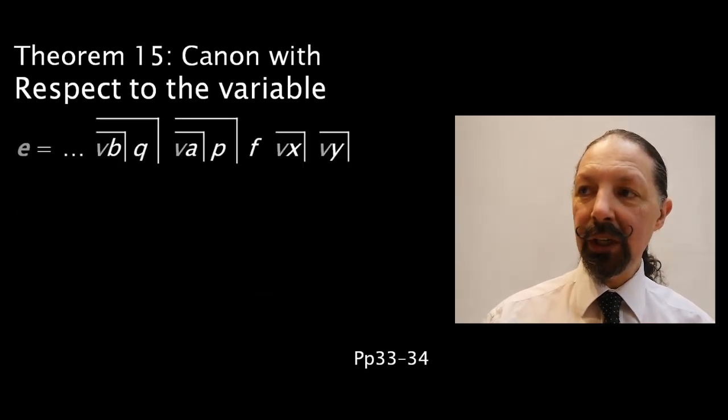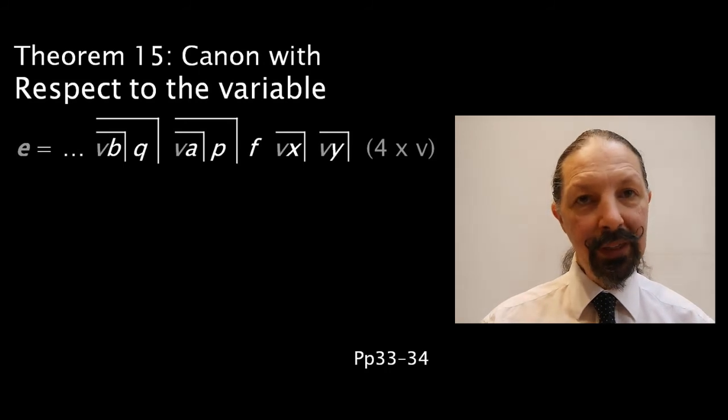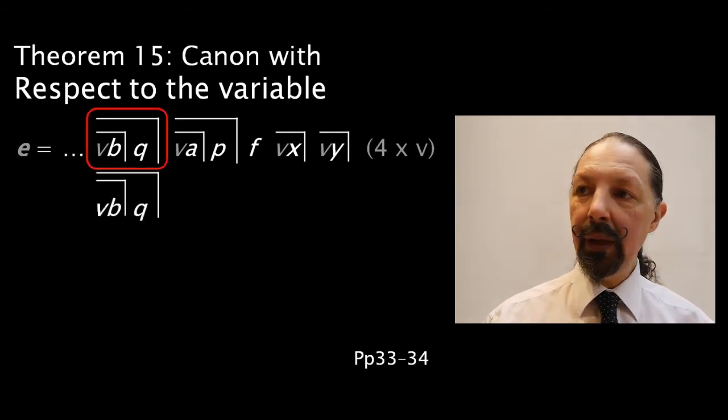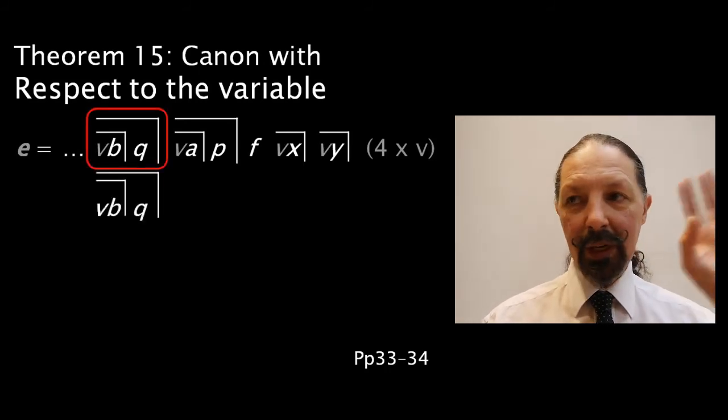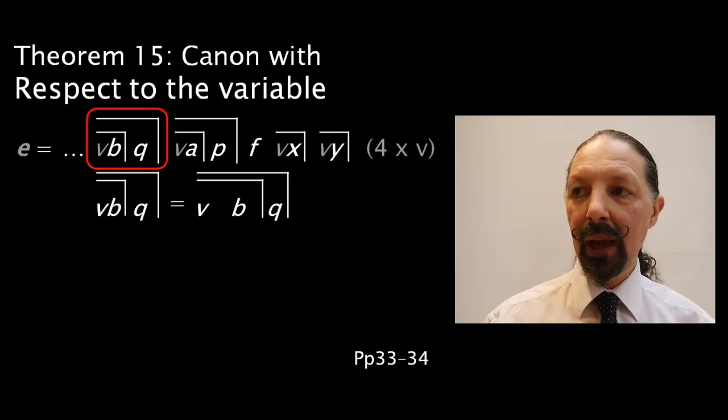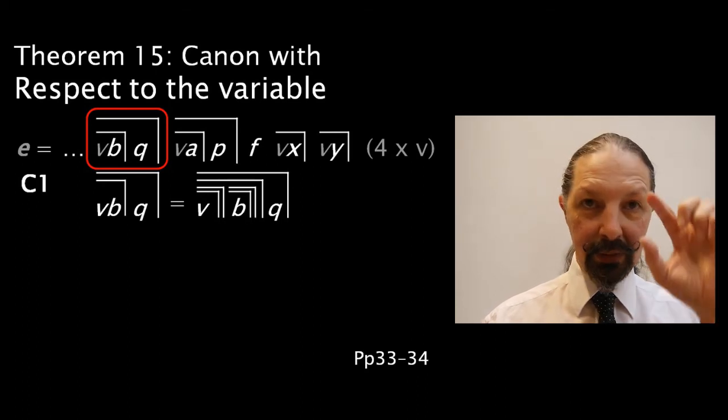We start with the expression that has four V's in it. We take the first part of the expression and we put C1 over the V term, C1 over the B term, C1 over the B term that creates a division of two within a space